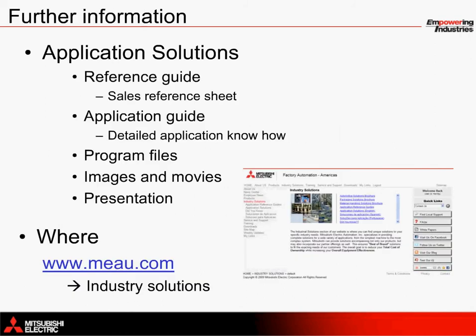For further information on the Mitsubishi Electric solution for high-speed multi-axis feeder machines, material can be found in five separate components: a double-page quick reference guide, a detailed application note, complete programming files, images and movies, and this presentation. All of this material is available on the MEAU website at www.meau.com. Just click on the Industry Solutions link to find your way to the material.